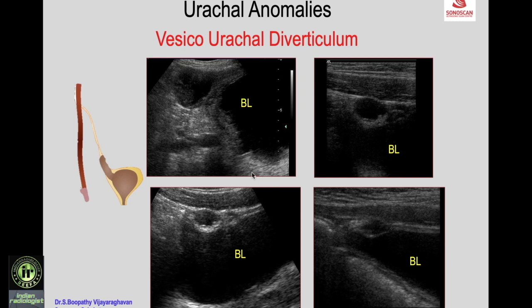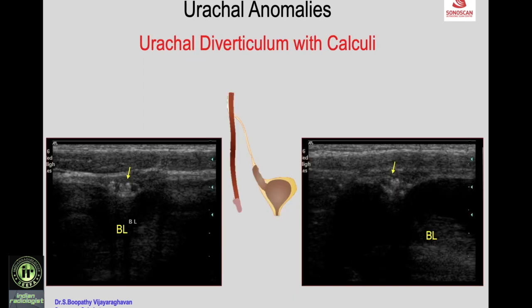The vesico-uracal diverticulum is persistent urachus closer to the dome of the urinary bladder, communicating with it. Varying appearances can be seen: a cystic mass close to the dome, a smaller thick-walled echogenic cyst, and a very small solid mass — these are the varying appearances of the vesico-uracal diverticulum. It can be associated with calculus.